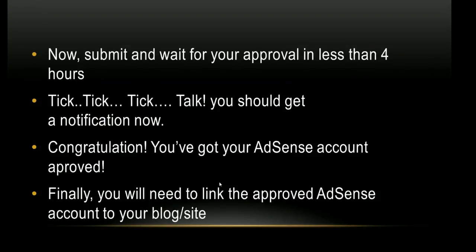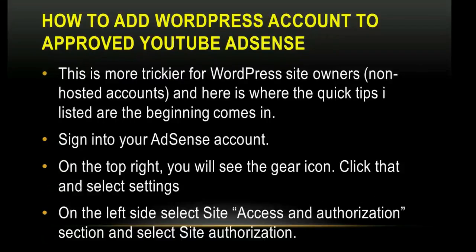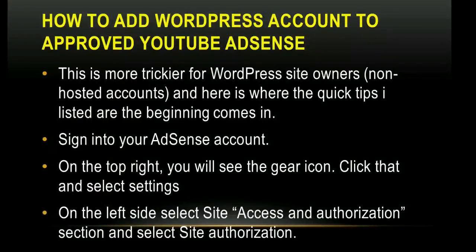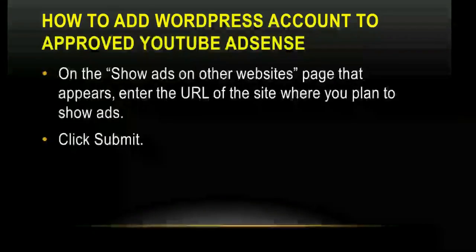Once approved, you will need to link your AdSense to your website, blog, or whatever platform you use — such as WordPress or Blogger. To link it to Blogger: log into your AdSense account, click on Account Settings, scroll down to locate the 'Invite' option, enter the email of your Blogger account, and click Invite. To link it to WordPress: sign into AdSense, click the gear icon at the top right, select Settings, then on the left side select 'Site authorization' and find the 'Show ads on other websites' tab.